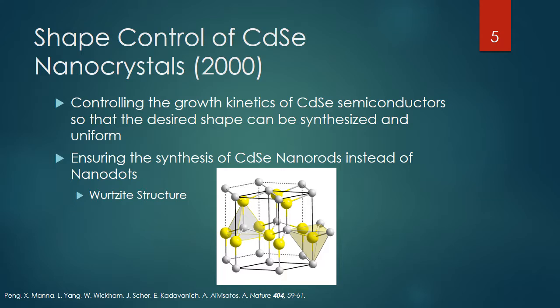If you want a rod, you want to extend the rectangles so they get longer and longer. I'll call this elongation the C-axis — going down where the rectangles are getting longer. You want these rectangles to get longer because this is how you get a nanorod instead of a nanodot.